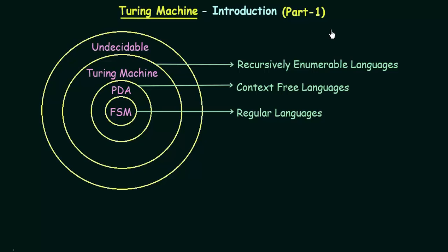Till now in this lecture series we have been studying about finite state machines and push down automata. We have studied about these two machines and we have also seen the class of languages they accept. And now as we move one step ahead, we are going to study about the next topic which is Turing machine.